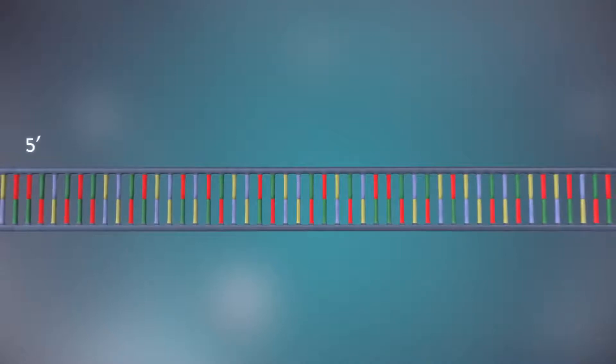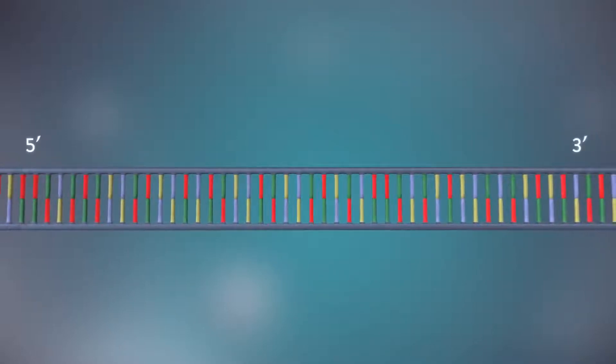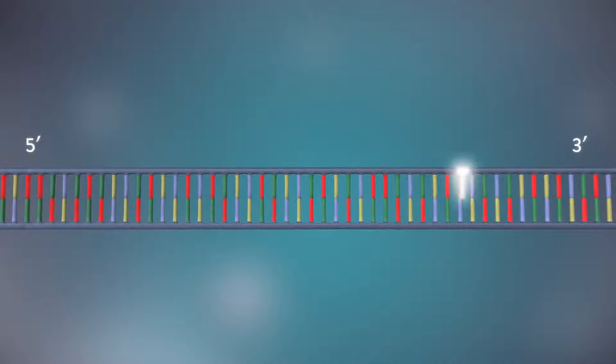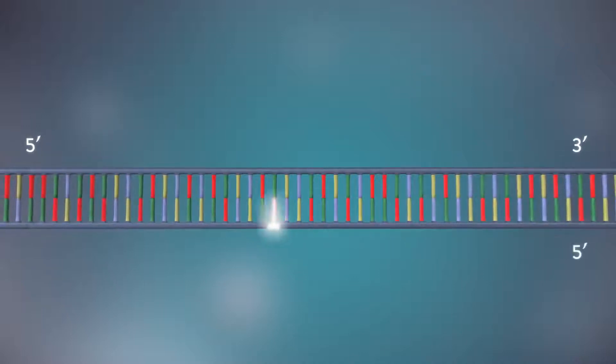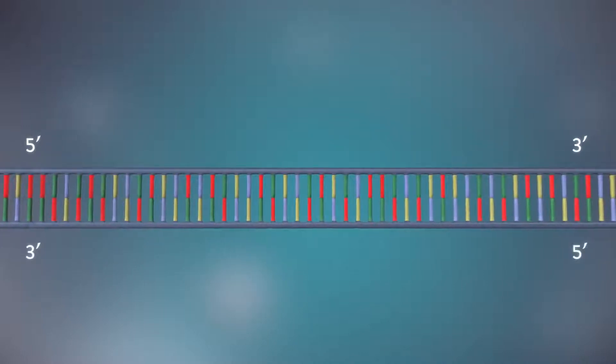Each strand has a five prime end and a three prime end. The two strands run in opposite directions. This determines how each strand of DNA is replicated.